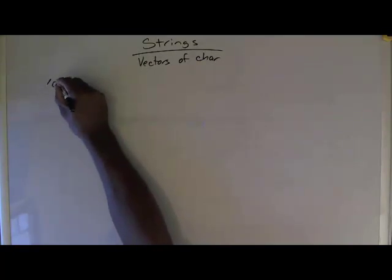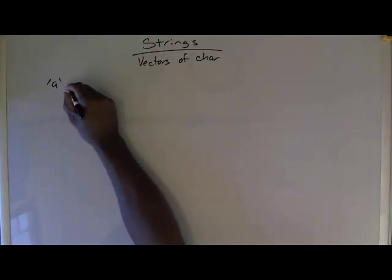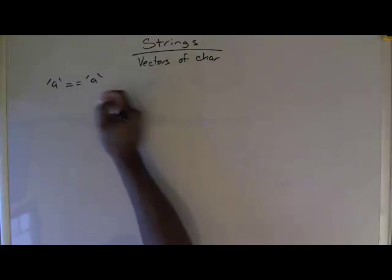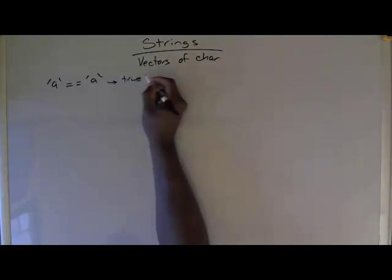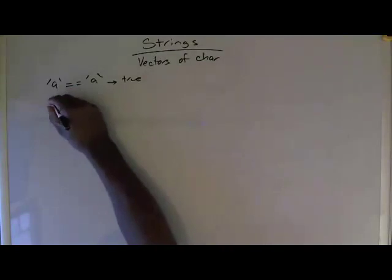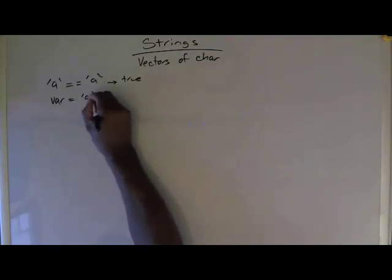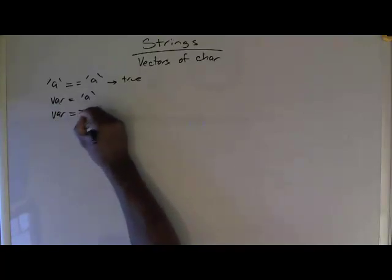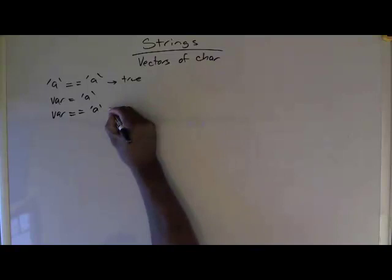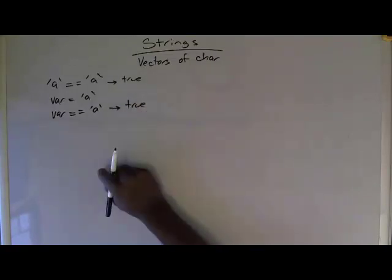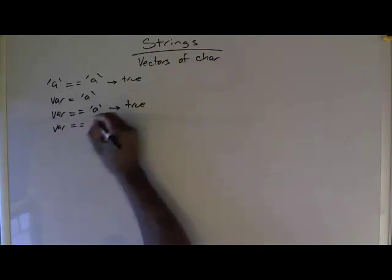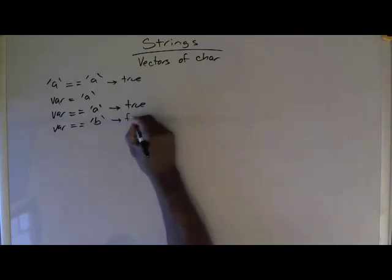So if you had string a or character a equal to character a, that's a logical expression and that's going to return true. If I created some variable equals a and then I said does that variable equal a, and we have actually seen this before, that's going to give me true as well, as opposed to if I said does that variable equal b, that of course is going to be false.